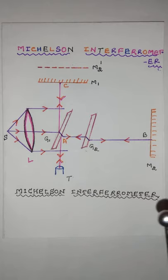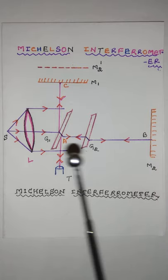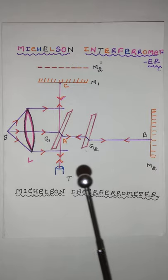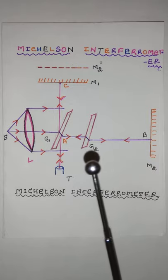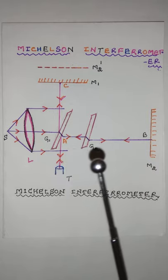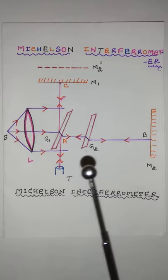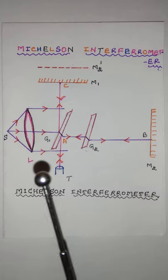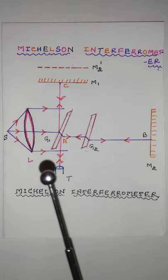The planes of the mirrors can be slightly tilted with fine screws at their backs. M2 is fixed and M1 can be moved parallel to itself by a very sensitive micrometer screw. G1 and G2 are two plane glass plates of equal thickness, and G1 is semi-silvered on the backside and is a beam splitter.